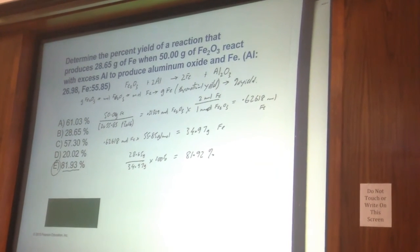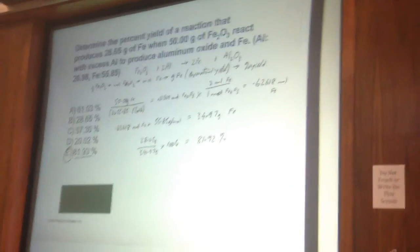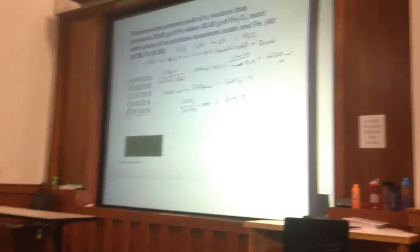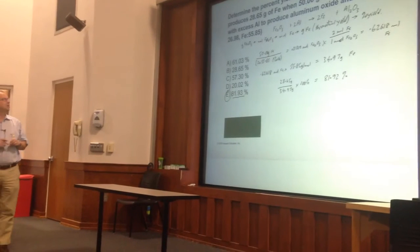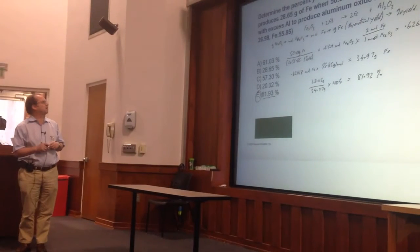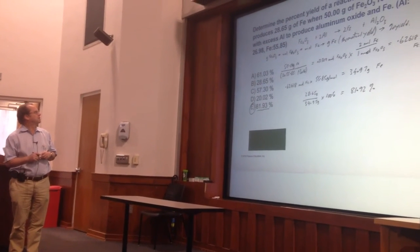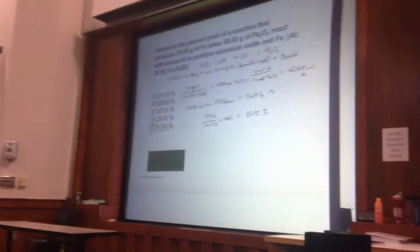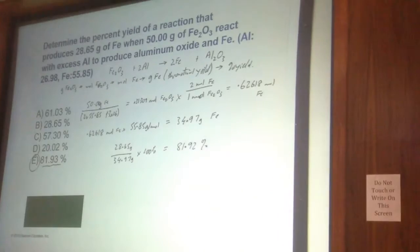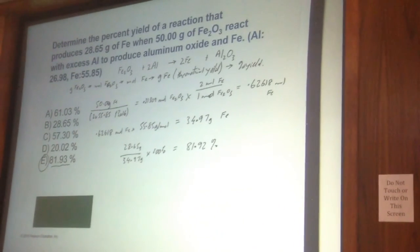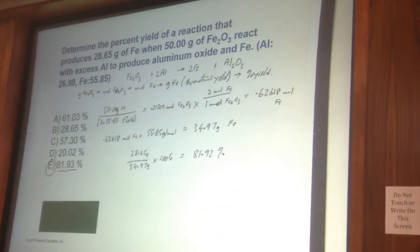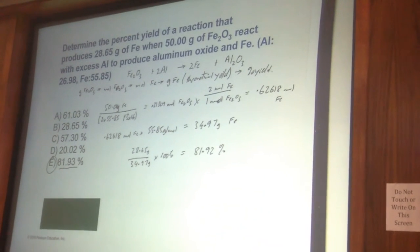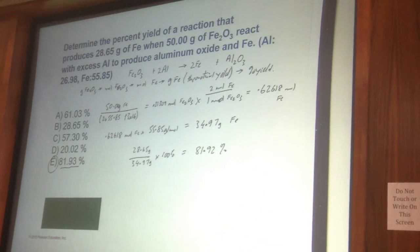What you could probably actually do to get the theoretical yield of iron more quickly is to just multiply the 50 grams by the ratio of mass of iron to iron oxide, which I think will be a little bit faster, but not overwhelmingly faster.